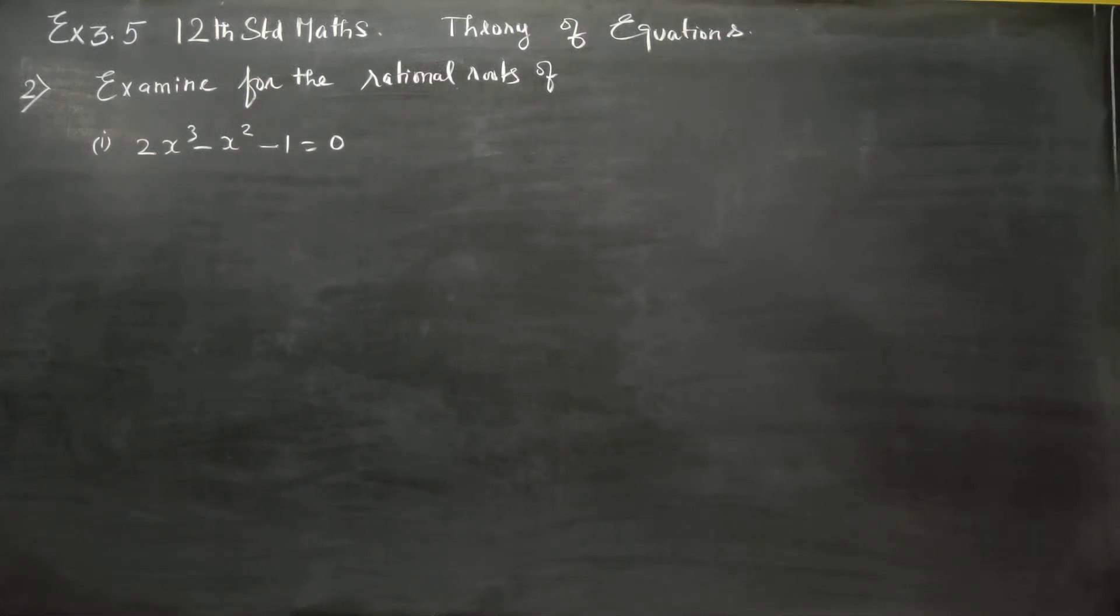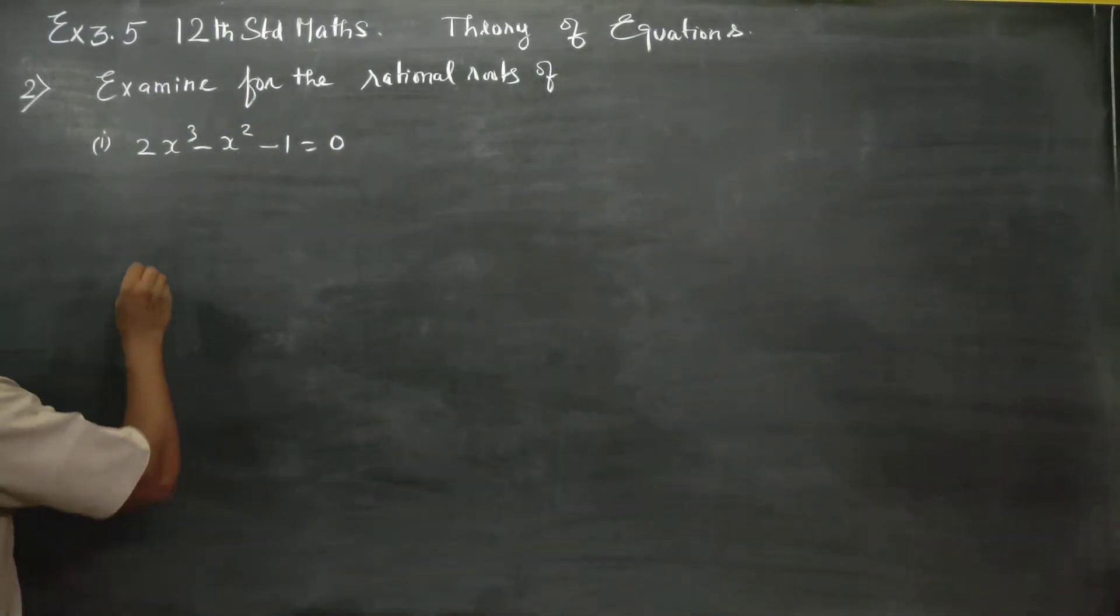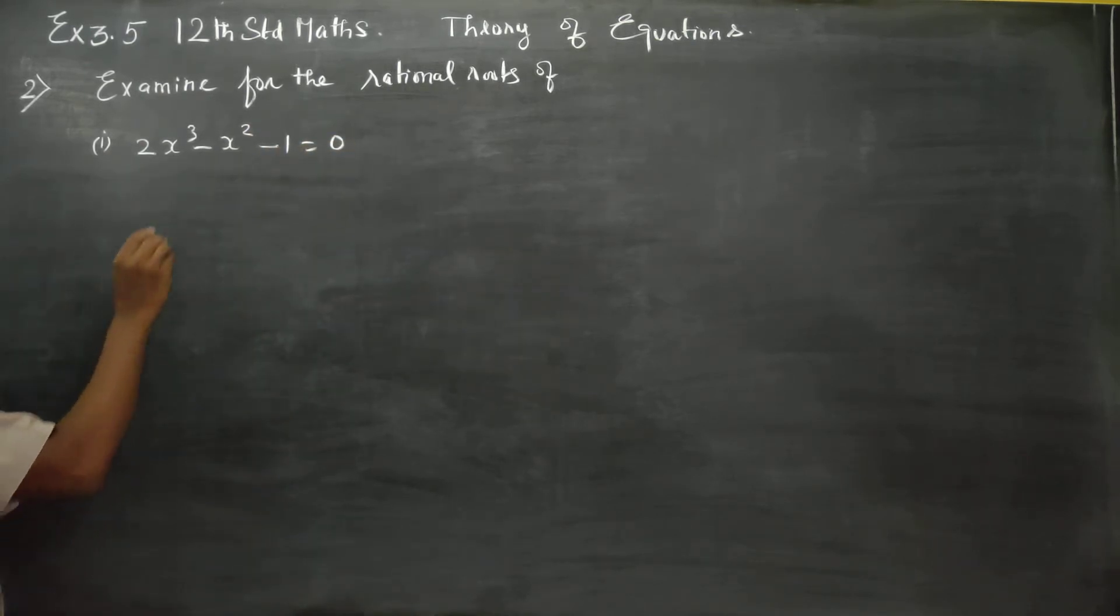Hello to all standard students. In exercise number 3.5, sum number 2, first subdivision, they are asking us to examine the rational roots. Rational is a fraction, numerator, denominator. That is how you can tell the roots.